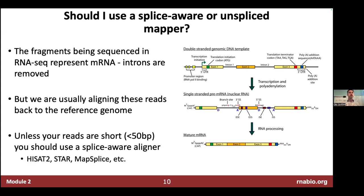Should you use a splice-aware or non-splice-aware aligner? The answer is probably use a splice-aware aligner. The fragments we're sequencing from mRNA have introns removed, but we're usually aligning those reads back to the reference genome, so unless you have very short reads you'll want a splice-aware aligner like HISAT or STAR — and that's exactly what we're going to do.